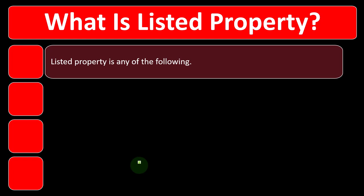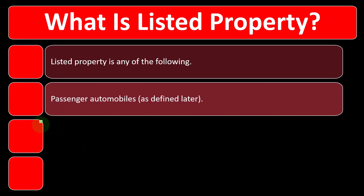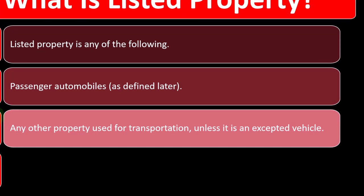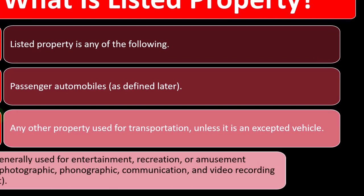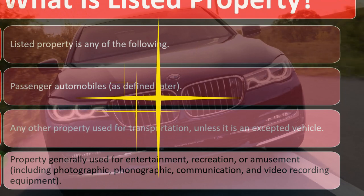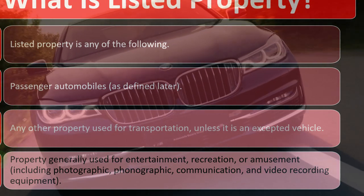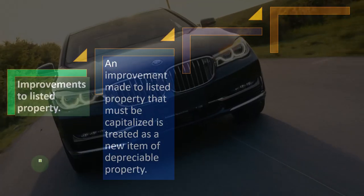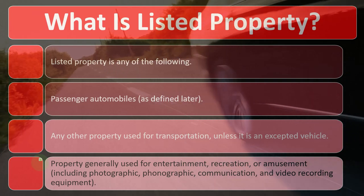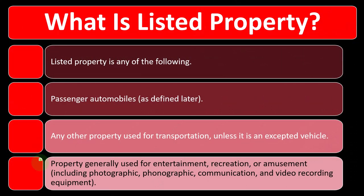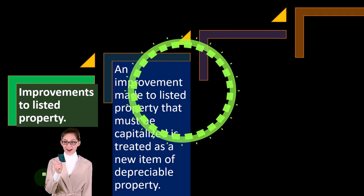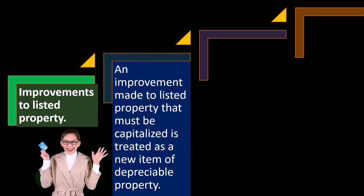What is listed property? Listed property is any of the following: passenger automobiles (defined later); any other property used for transportation unless it is an accepted vehicle; and property generally used for entertainment, recreation, or amusement, including photographic, phonographic, communication, and video recording equipment. You can imagine that certain industries are more likely to use some of these items, and questions arise about business versus personal use, which gets more complicated when the business seems more recreational in nature.